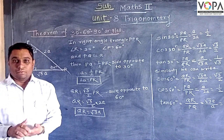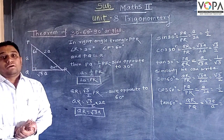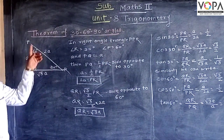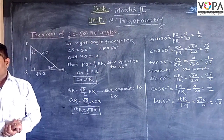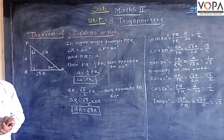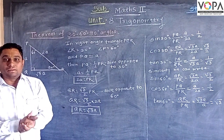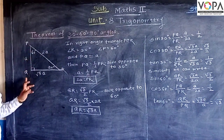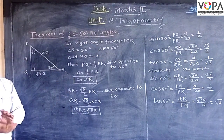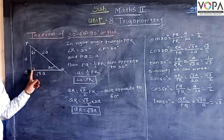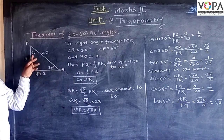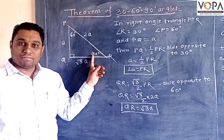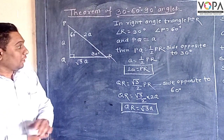Hello friends, now we are going to learn our next topic from this chapter — that is the 30-60-90 degree angles. We look at a right angle triangle. In triangle PQR, this angle is 90 degrees, this angle is 30 degrees, and this angle is 60 degrees. That is, angle P is 60 degrees and angle R is 30 degrees.